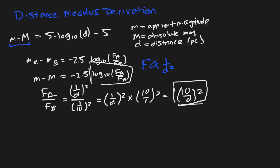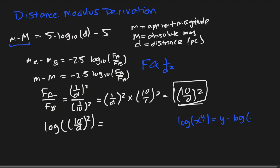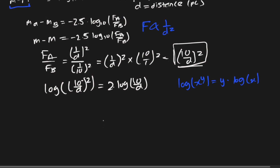Now we need to find the log of this flux ratio value. We can use the log exponent rule: log of x to the power y equals y times log of x. Applying that here, log base 10 of (10/d) squared equals 2 times log of 10 over d.